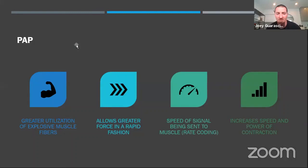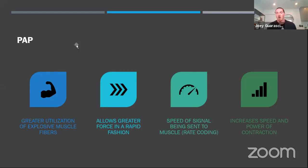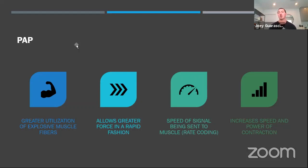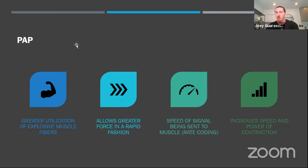Post-activation potentiation (PAP): the old metaphor is like a pail on the floor you think is full of water — you go to swing it and it's empty, so you swing it faster than if you'd known it was empty. We're essentially tricking our body into producing more force than required. PAP gives you greater utilization of explosive muscle fibers — activating more fast-twitch fibers — greater force development, increased speed of signal sent to the muscle via rate coding, and increased speed and power of contractions.